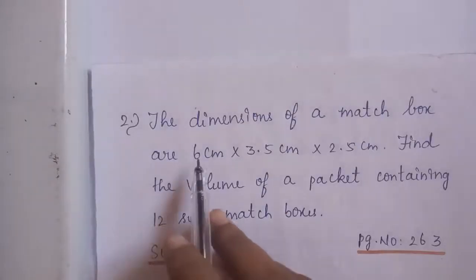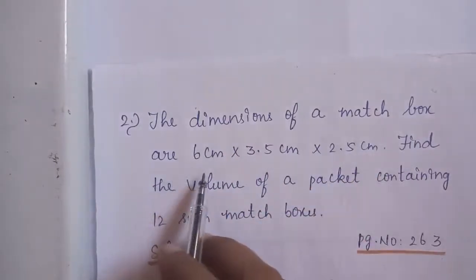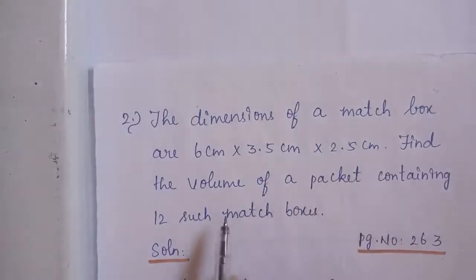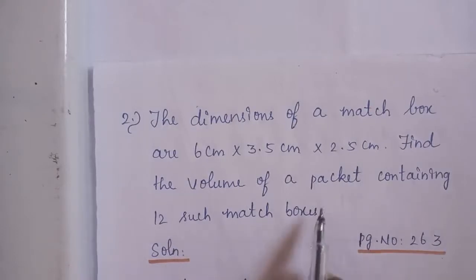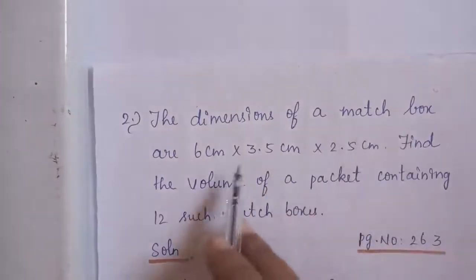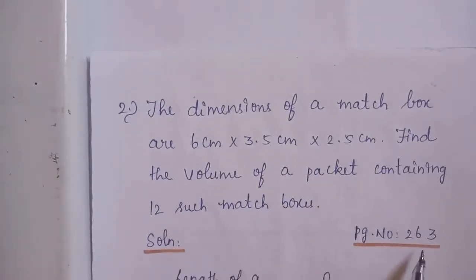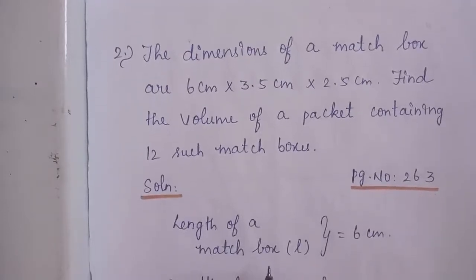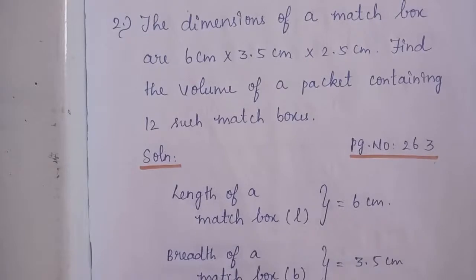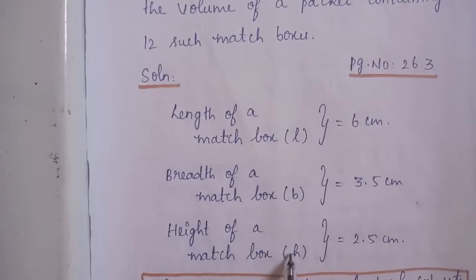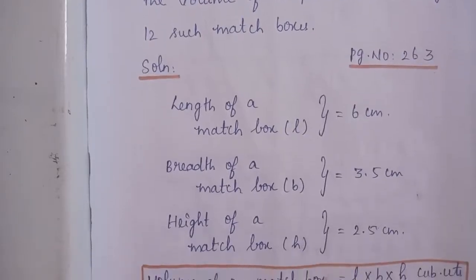Problem number 2: The dimensions of a matchbox are 6 cm into 3.5 cm into 2.5 cm. Find the volume of a packet containing 12 such matchboxes. The problem belongs to page number 263. Length of the matchbox L is equal to 6 cm, breadth is equal to 3.5 cm, and height is equal to 2.5 cm.